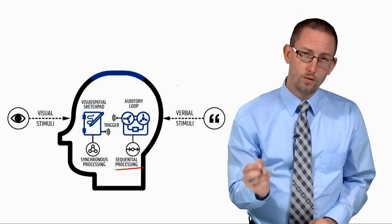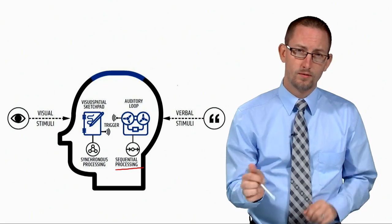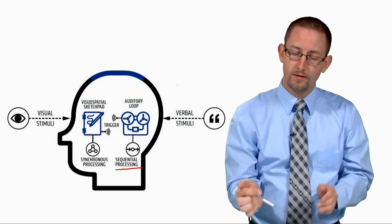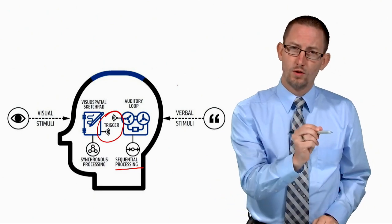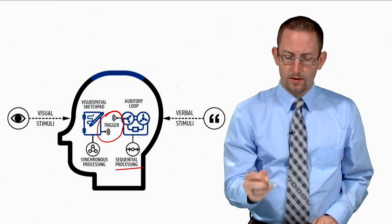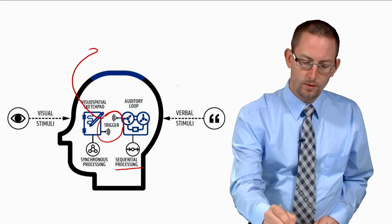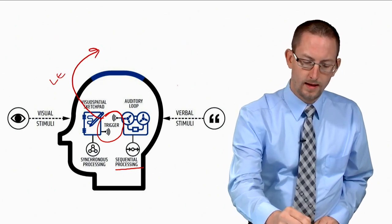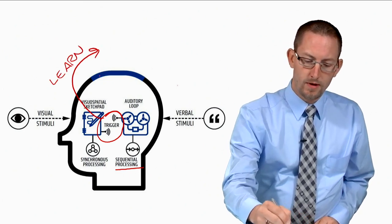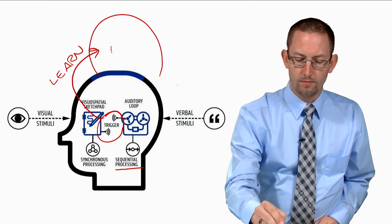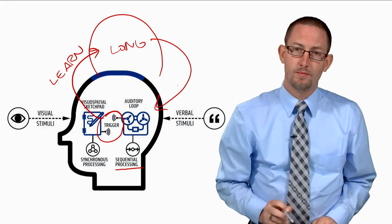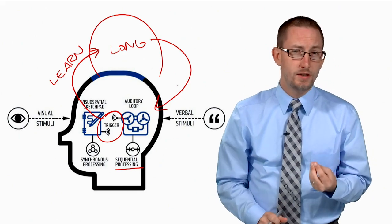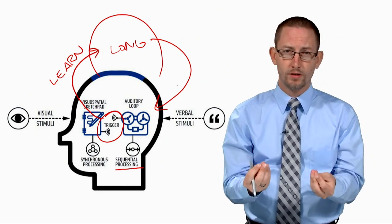However, if we can connect those two, they operate separately, but if we can trigger those to connect, so the visual and the auditory, this interesting thing happens when we learn that allows us to remember that much better in our long-term memory. So that when we need to retrieve that information later, it's much easier to process because it's dual encoded.